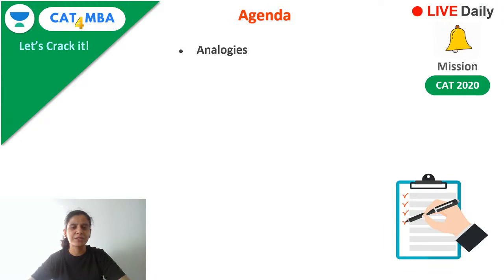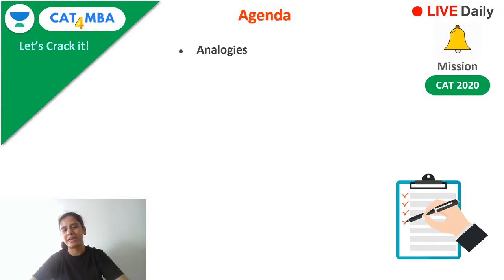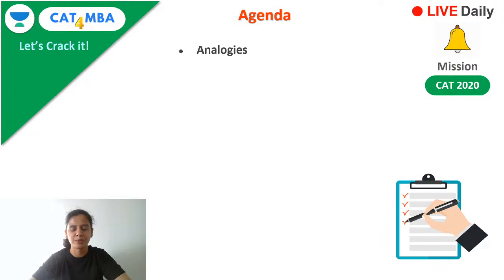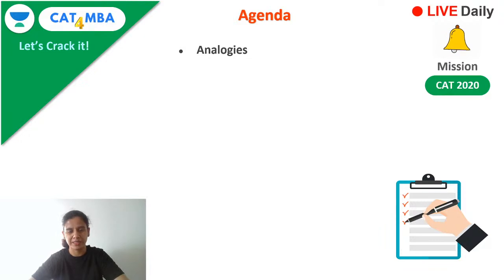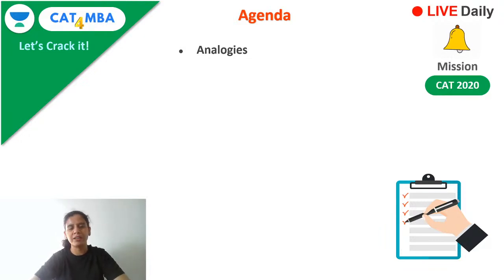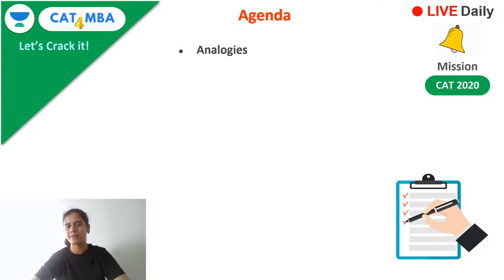We are going to talk about analogies today, and I'll tell you how to get the maximum score in these questions — basically what are the steps we need to follow so that we can answer these questions correctly. I'll also cover what type of questions we can expect. Usually we can expect around two to three questions of analogies in exams like SNAP, MAT, XAT, and others.